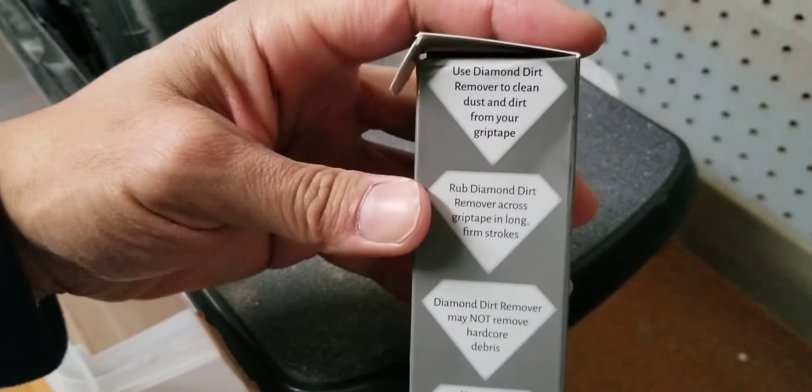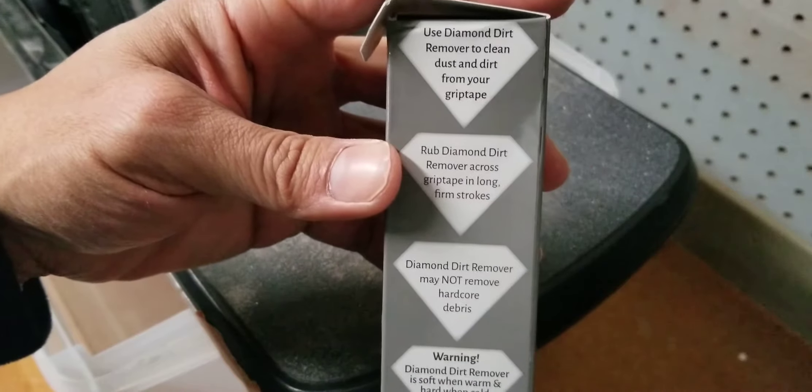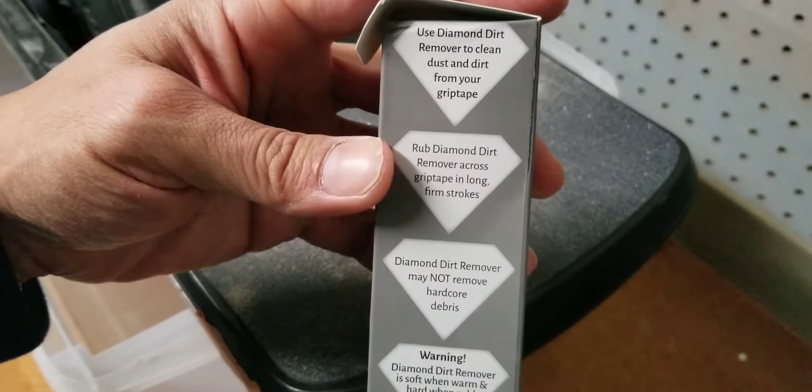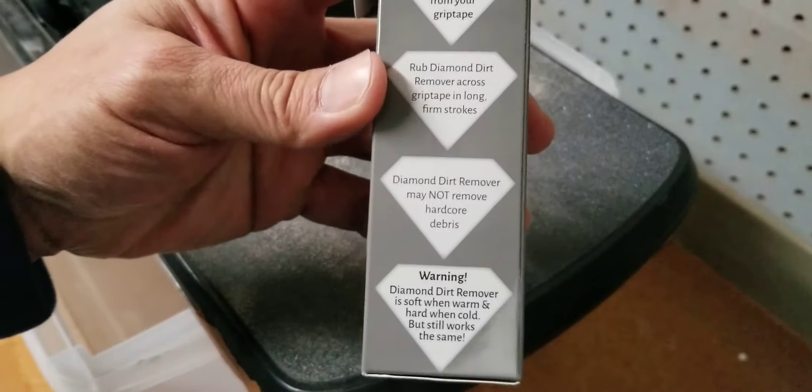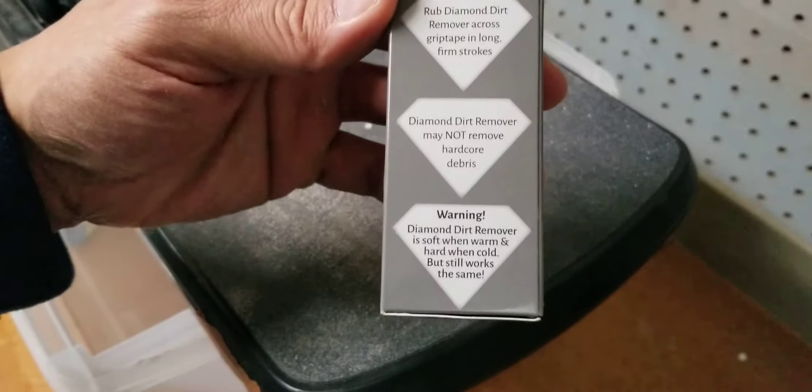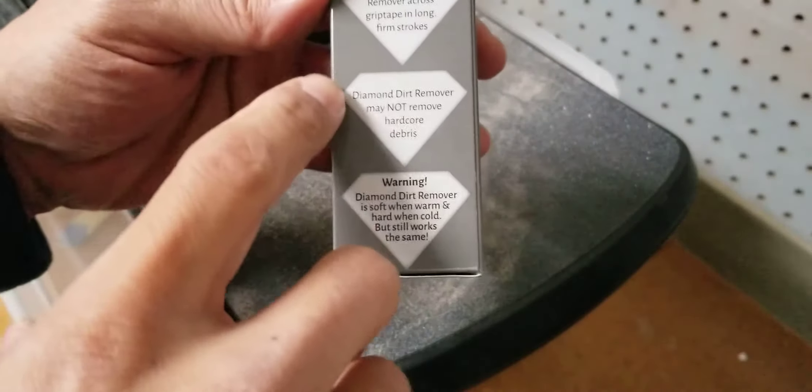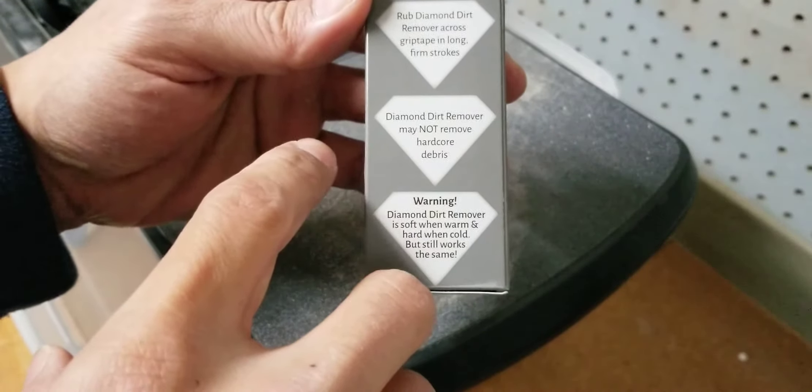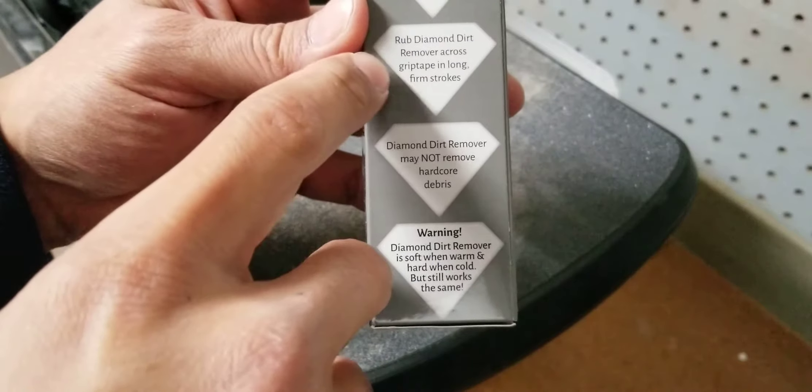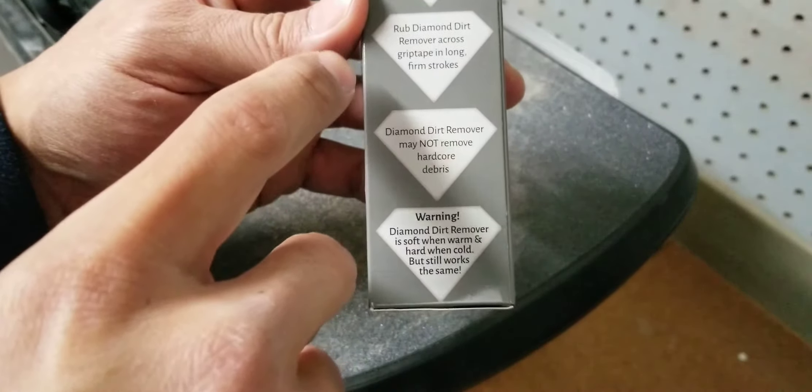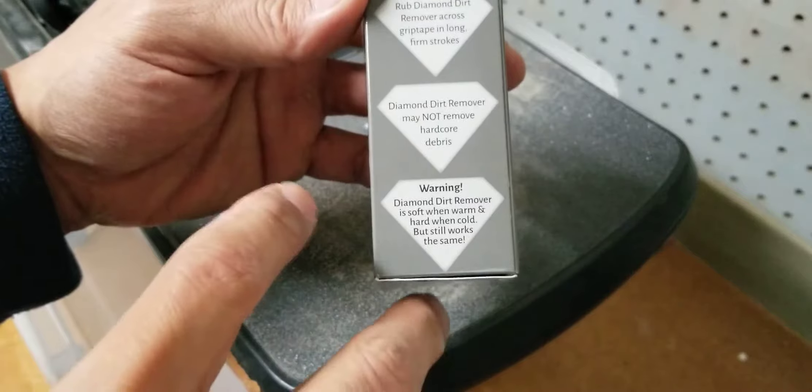And a little info on what it does exactly. So it removes dirt and debris from grip tape. It tells you what to do here. So what you're going to do is rub the diamond dirt remover across the grip tape in long firm strokes.